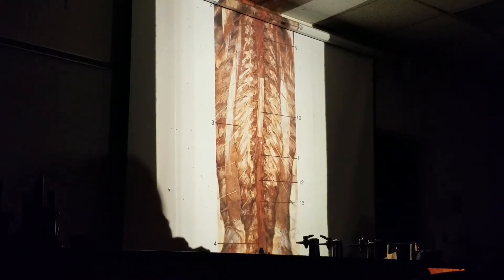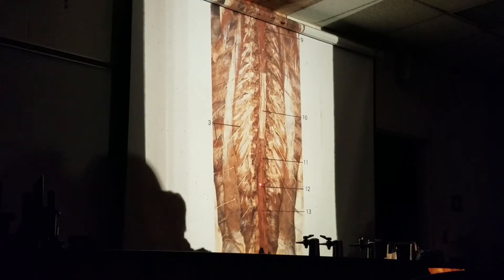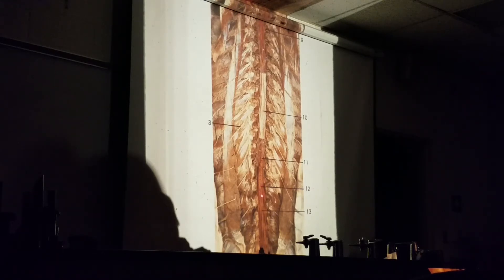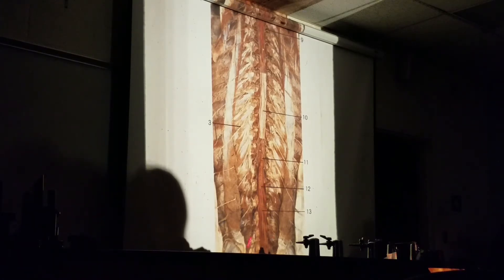But then we go to the interior. Go down to this point right here, where it changes. So what are you going to call this point? That's where it shifts. What are you going to call it? Conus — so this is the conus of the cord. And then all these descending roots — cauda. So you go conus to cauda.